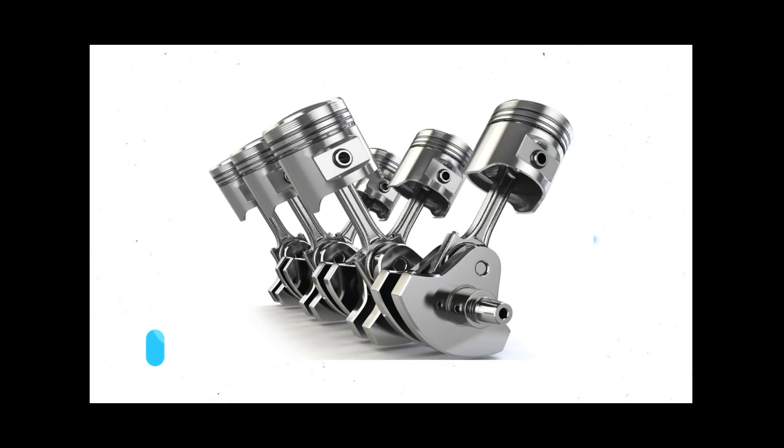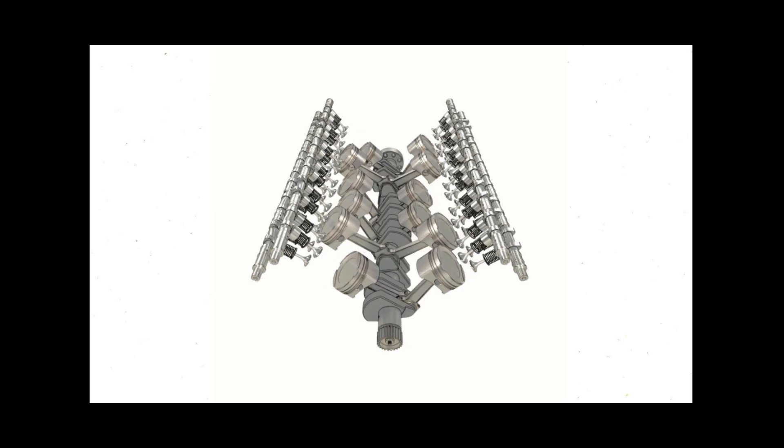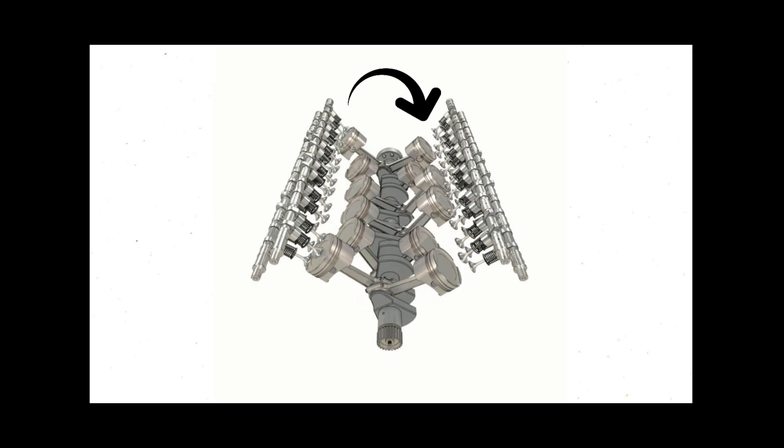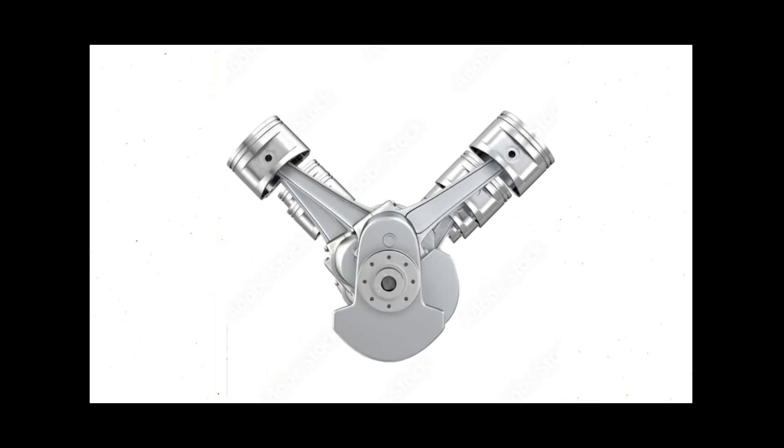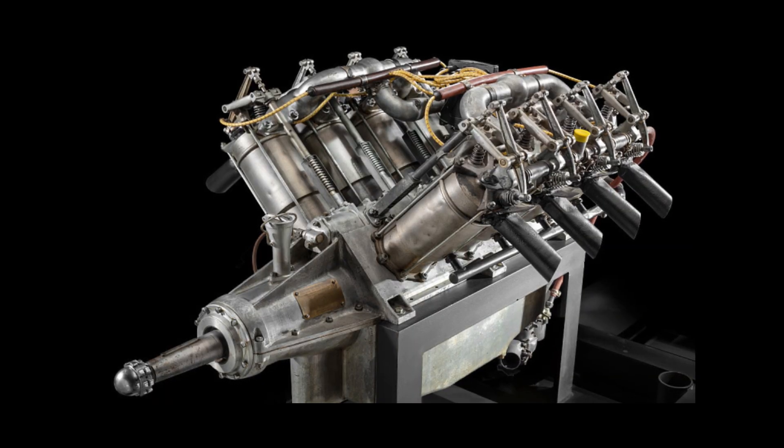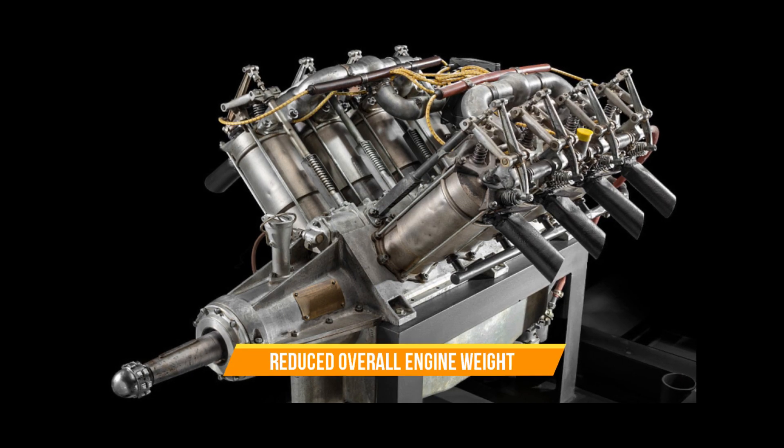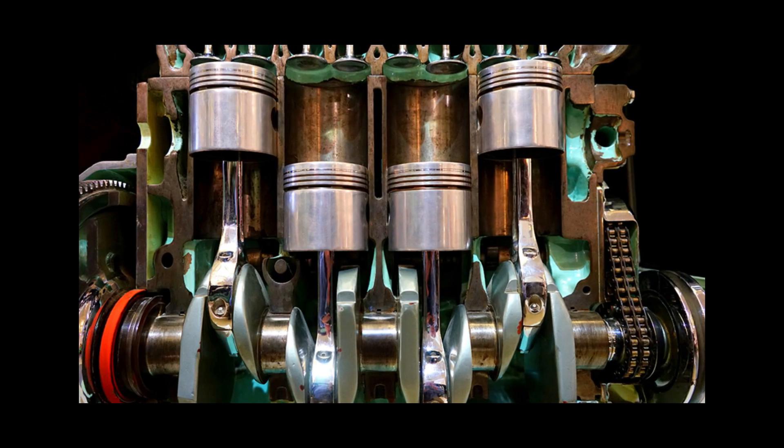The cylinders and pistons in a V-type engine are aligned in two separate planes in such a way that they appear to be in a V shape when viewed from the top. The unique shape of this engine substantially reduces the overall engine weight and length compared to inline engines.